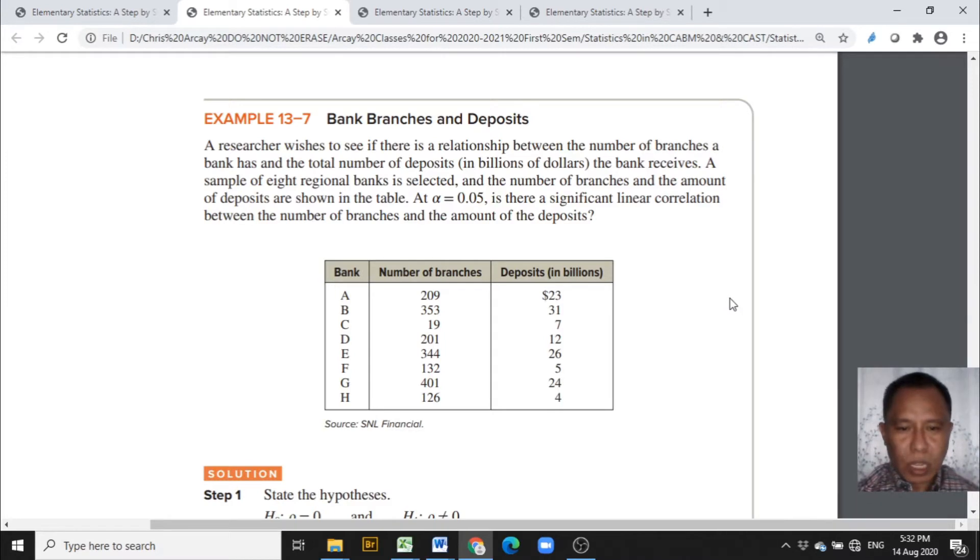A researcher wishes to see if there is a relationship between the number of branches a bank has and the total number of deposits in billions of dollars the bank receives. A sample of eight regional banks is selected and the number of branches and the amount of deposits are shown in the table. Here we are given a table of three columns: the first column are the names or codes of the banks, the second column is the number of branches, and the third column gives the deposits in billions of dollars.